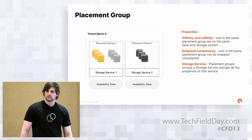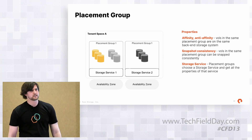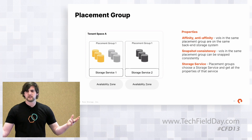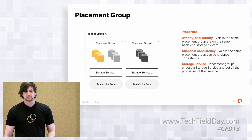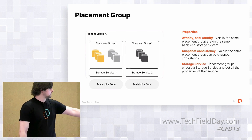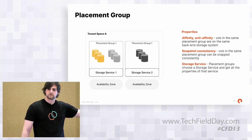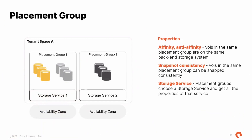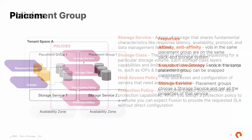Now I need a spot for my backup. I have much lower performance expectations there, so I can pick a different storage service — lower latency requirements, cheaper price, my bosses are happy. So placement group two is where my backup volumes go. Easy to understand and think about as a developer laying out application expectations. The whole point is: as a developer, this gives you access to what you need in ways you'll understand. Nobody is telling me about storage arrays — I don't care about that.